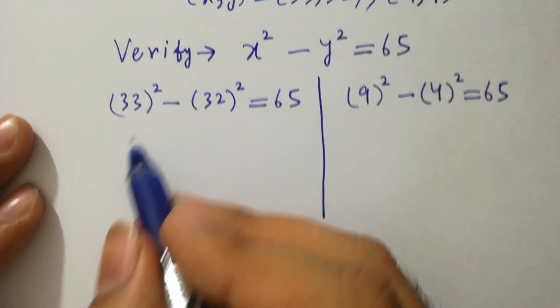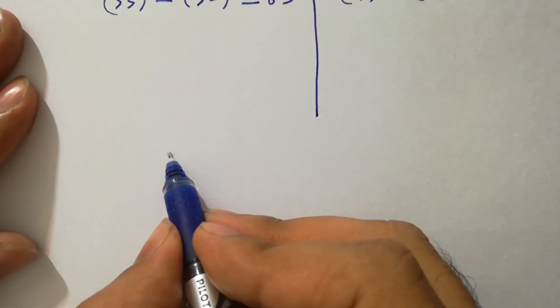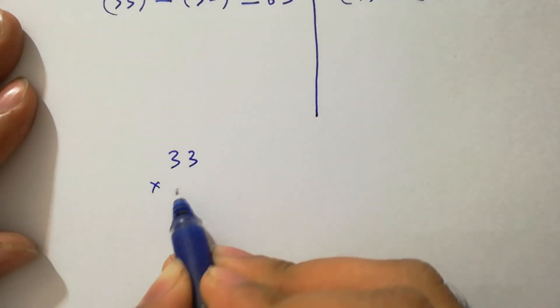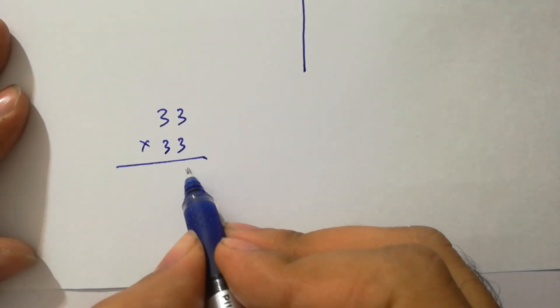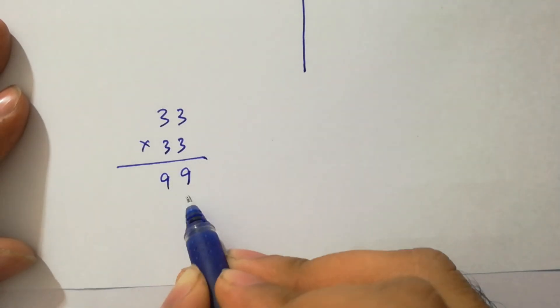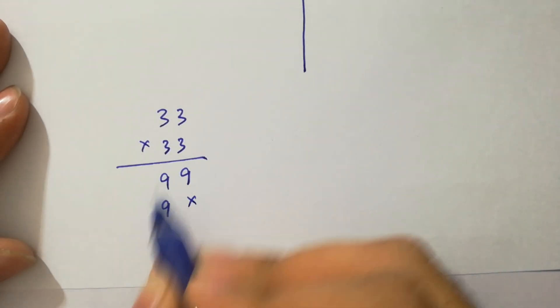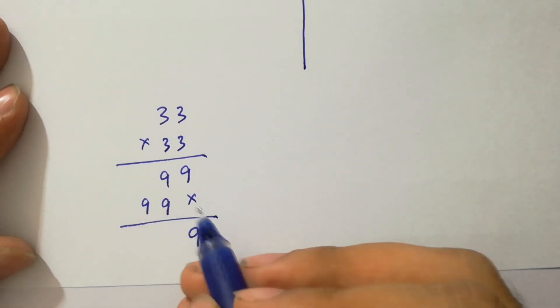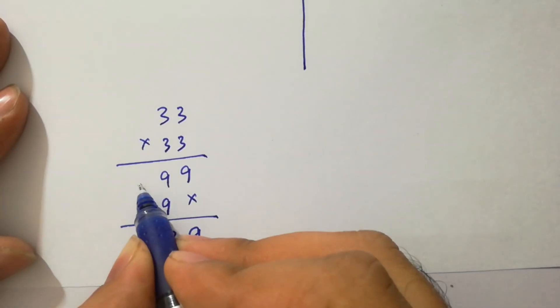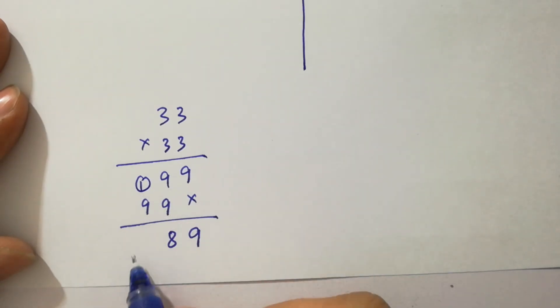Now 33 times 33. We have here 3 times 3 is 9, 3 times 3 is 9, 3 times 3 is 9. It will be 9 as this. 9 plus 9 is 18, 8 here, 1 carry. 9 plus 1 is 10.